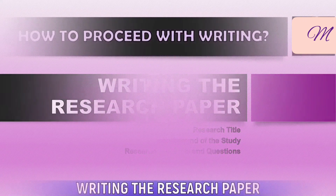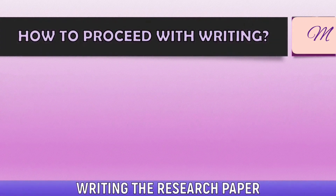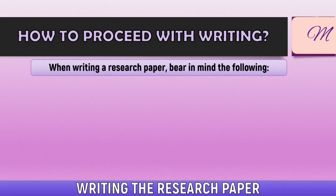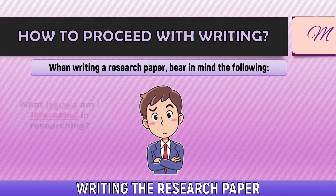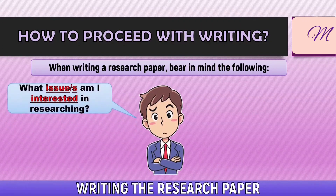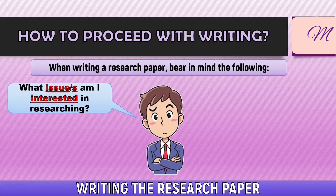In answering the question of how to proceed with writing, a researcher must bear in mind the following questions. First, what issues am I interested in researching? Remember that in writing a research, it would always start with a question in mind — a question that you want to be answered.